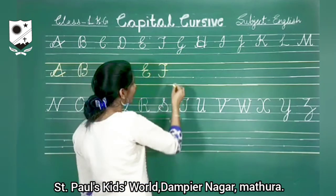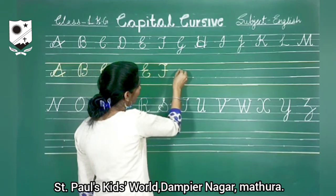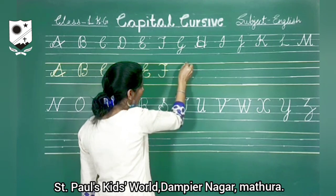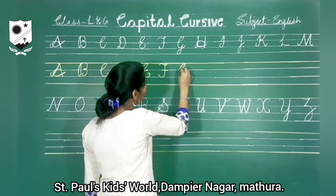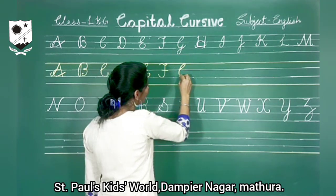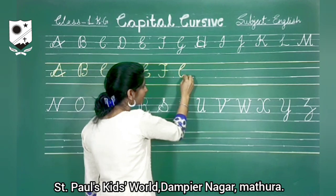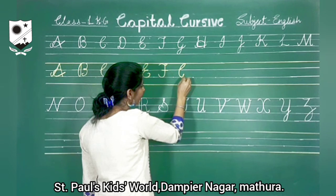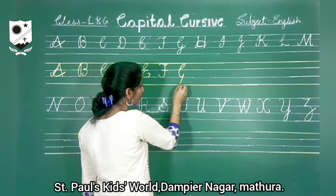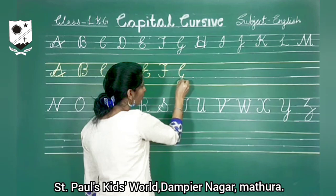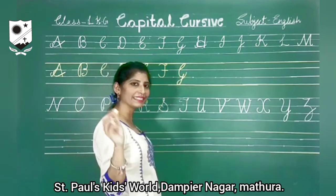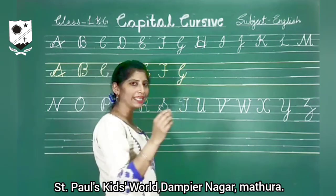Now capital G. Start from the second line. Look here. Take this curve up towards the third line. Loop. Bring it back towards the third line. And then again come back towards the fourth line. Loop. And then leave it. Capital G.